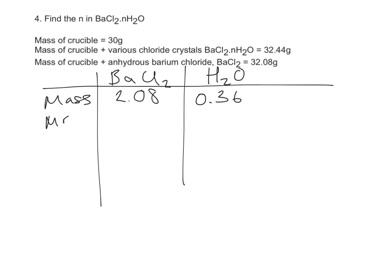Okay, MR. I'm reliably informed that the mass of barium is 137, so I'm going to add that to 2 lots of chlorine, which is 35.5, and I'm going to get an MR of 208. So that's the mass of barium chloride, and again, water is 18.